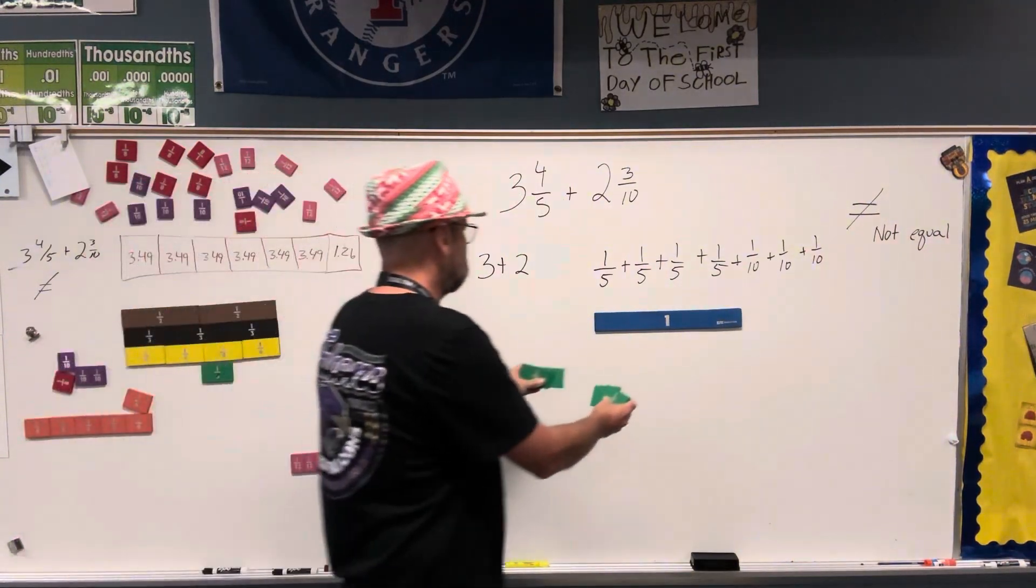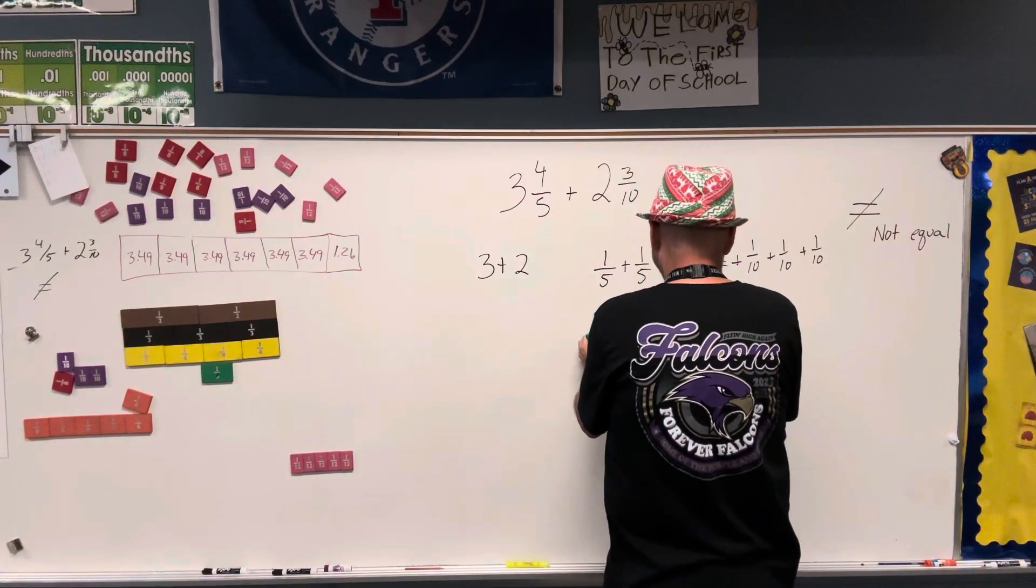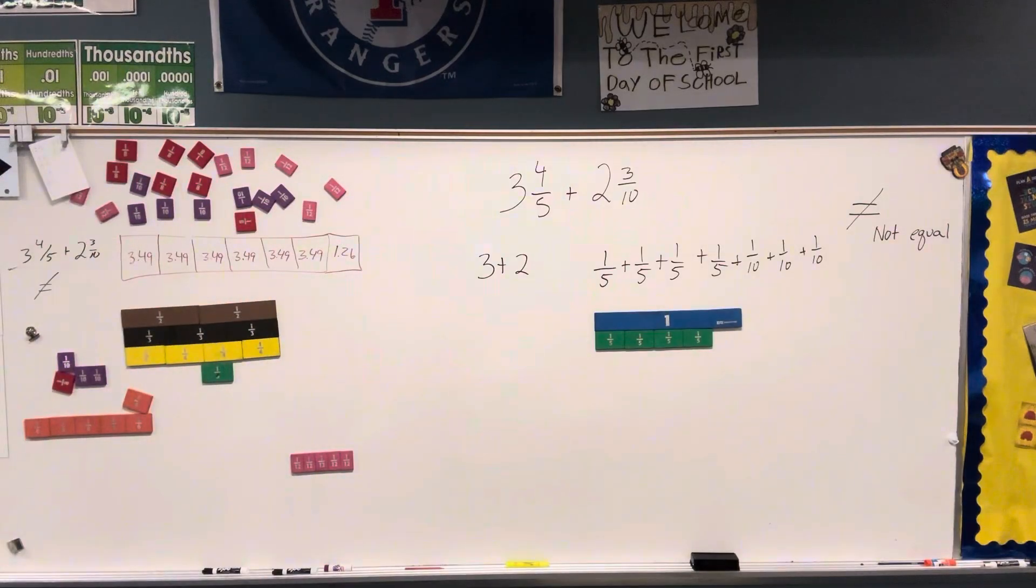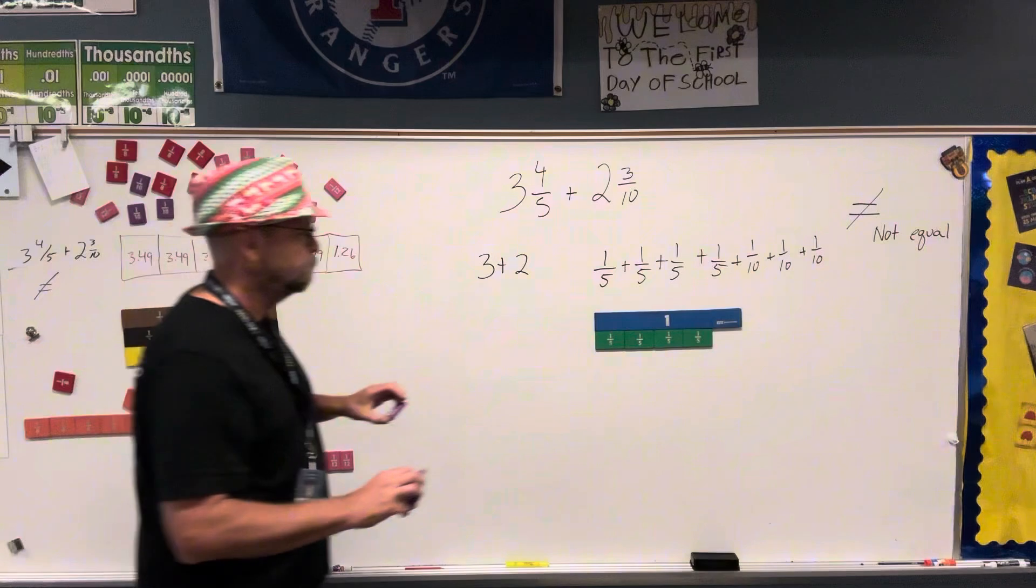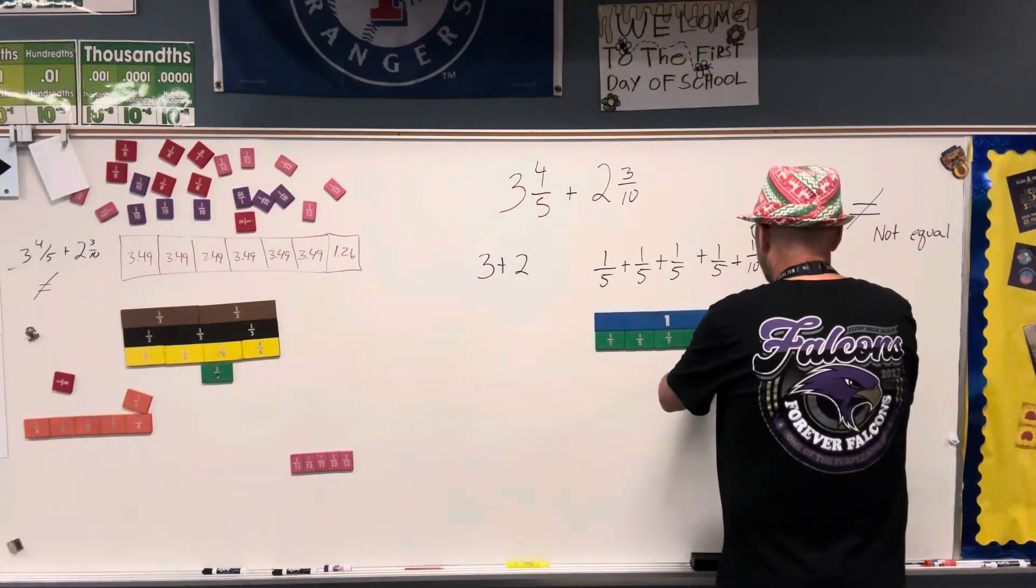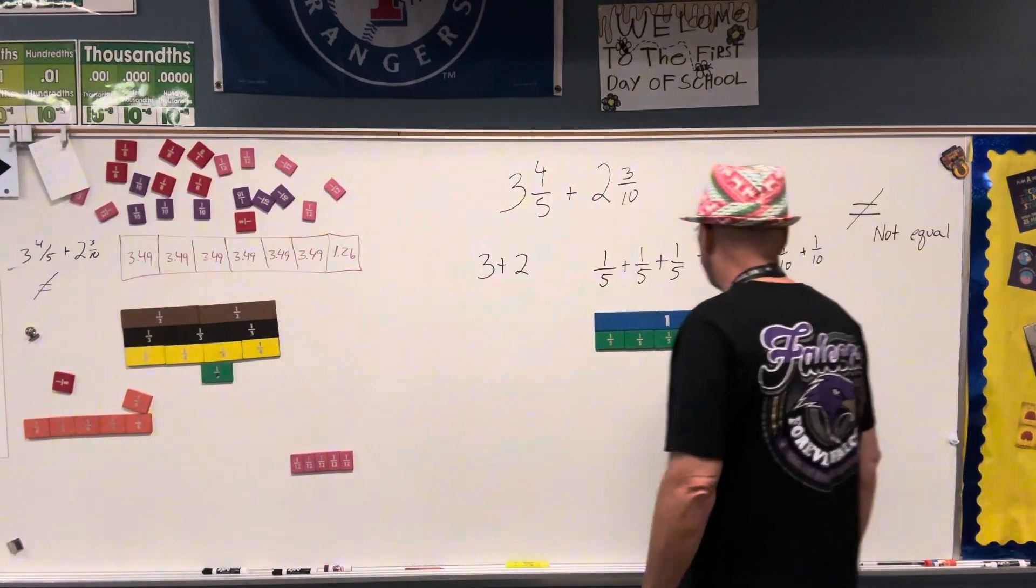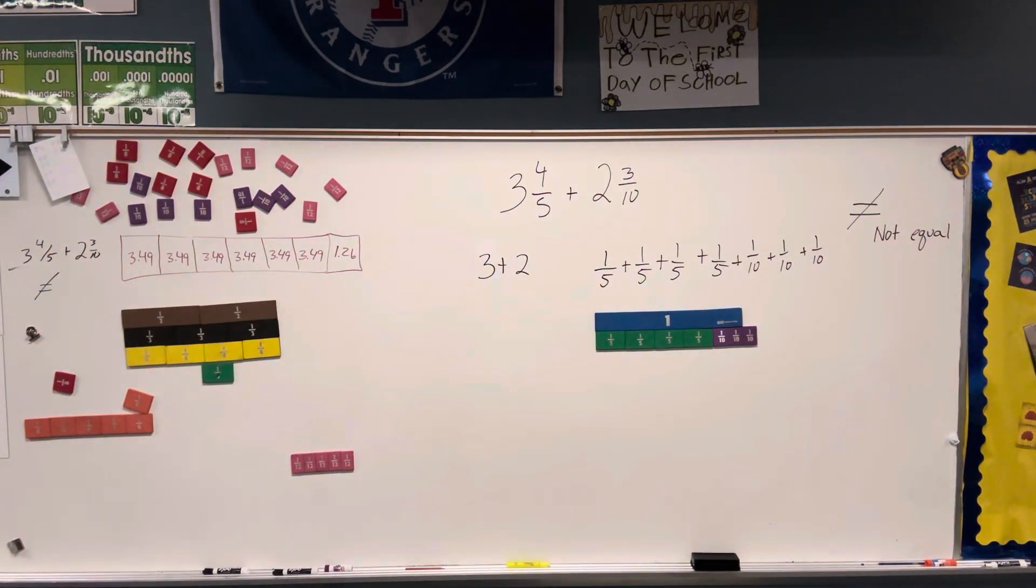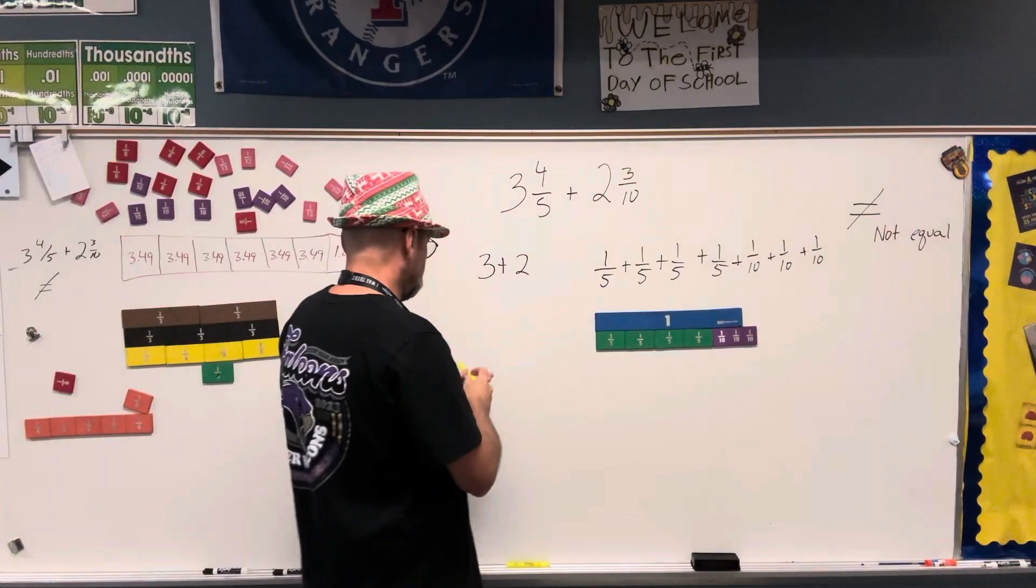So if I have 4 fifths, which is less than 1, because I'm always going to start by comparing it to 1. And 3 tenths, now it's 4 fifths plus 3 tenths, less than or greater than 1? Greater than.